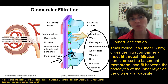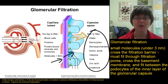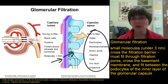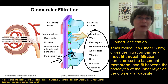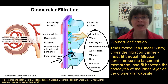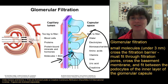So only really small things can get into the capsular space — things like water, glucose, amino acids, vitamins, small fatty acids, ions, and also nitrogen waste such as ammonia, urea, and uric acid that we're trying to get rid of, as well as some toxins, hormones, and many drugs that are filtered out of the glomerulus into the capsular space to go out in the urine.